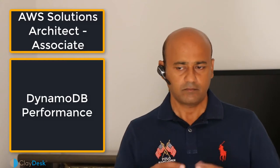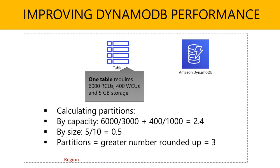For example, let's say a table requires 6,000 read capacity units, 400 write capacity units, and initially you're looking at about 5 gigabytes worth of storage. To calculate the number of partitions, one partition can handle 3,000 RCU, so 6,000 divided by 3,000 gives you 2. For write capacity units, one partition can handle 1,000 and you only need 400, so that gives you 0.4. In terms of storage, you only need 0.5 of a partition.